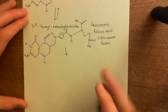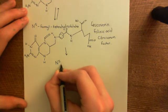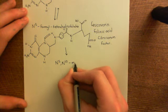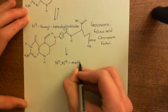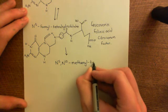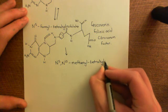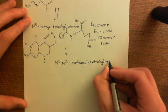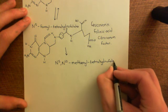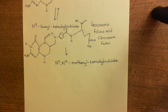Okay, so the next molecule you can convert this into is a molecule known as N5-N10-methylene tetrahydrofolate. Okay, and this is the final molecule I'm going to show you in this video. So N5-N10-methylene tetrahydrofolate. Right, and we'll look at the structure of this molecule in the next video.